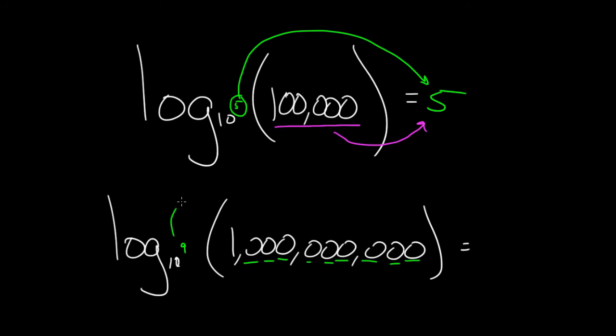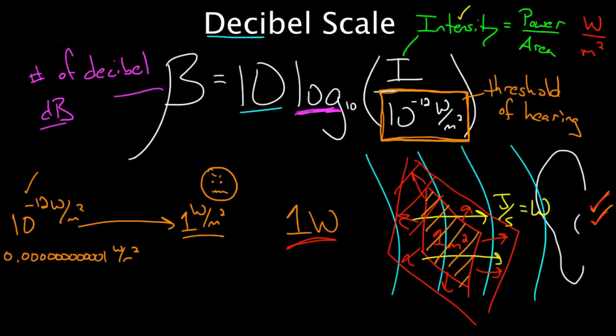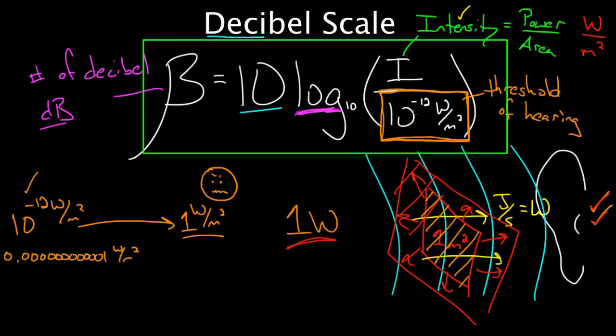I raised 10 to the ninth to get this number. So the answer to this question for the logarithm is 9. And that's why logarithms are good. Logarithm took this enormous number, a billion, and turned it into 9. So logarithms take enormous scales, turn them into nice scales. That's why we like this formula, which is our decibel scale, because it takes enormous intensities and small intensities, turns them into nice intensities.